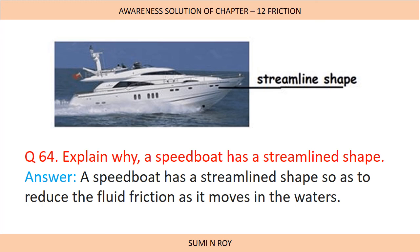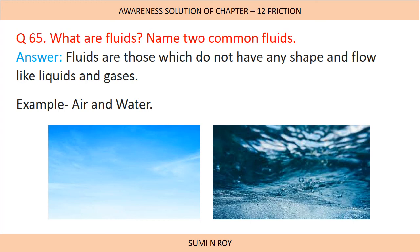A similar question: Explain why a speedboat has a streamlined shape. A speedboat has a streamlined shape so as to reduce fluid friction as it moves through water. The last question: What are fluids? Name two common fluids. Fluids are substances that do not have any fixed shape and flow, like liquids and gases. For example, air and water. Liquids and gases combined are known as fluids.